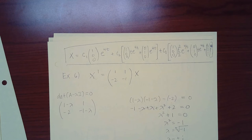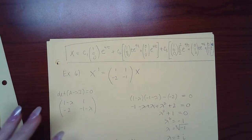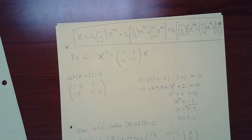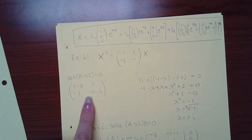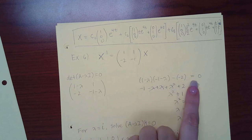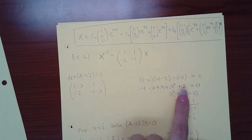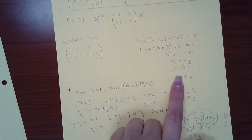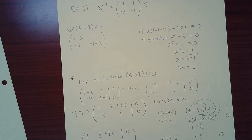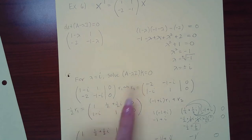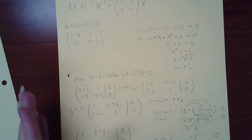The next example is a two-by-two matrix with complex eigenvalues, so it won't be as extensive but may still be tedious. We take the determinant, multiply out, combine like terms, and solve for lambda using the quadratic formula, getting lambda = plus or minus i. With complex eigenvalues, you only need to find k once, then break it into its real and imaginary parts and apply the formulas.